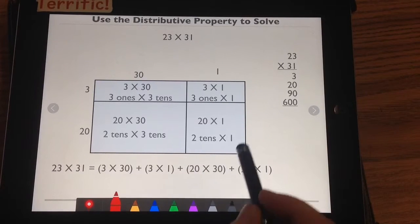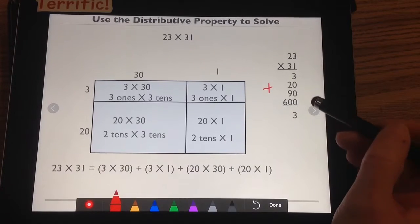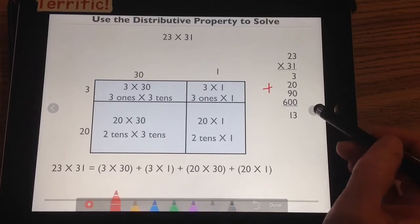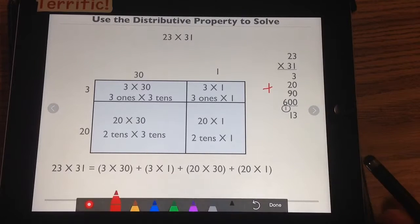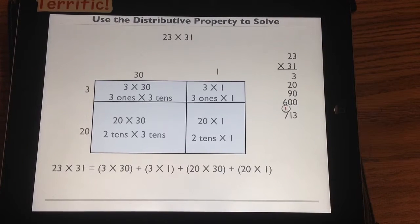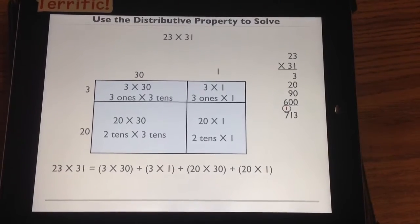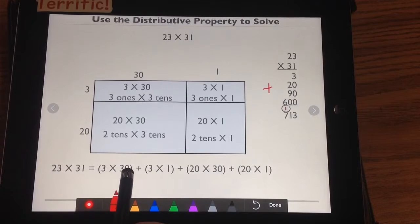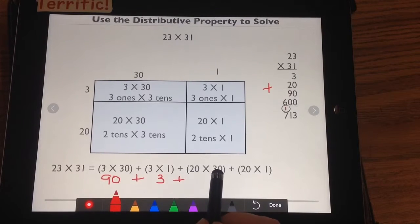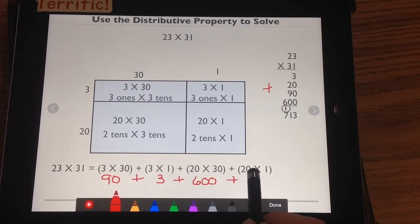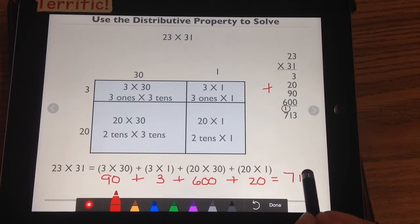If I add them all up, 3 plus nothing is 3. 9 plus 2 is 11, which I can't put in one spot. So it's 1. And I had to bundle 10. So I carry that 1 over. 6 plus 1 is 7. So I should have my answer as 713. Let's see if we agree. 3 times 3 tens is 9 tens. 3 times 1 is 3. 2 tens times 3 tens is 6 hundreds. 2 tens times 1 is 20. If I add it all up, I get 690, 700, 710, 713. They match.